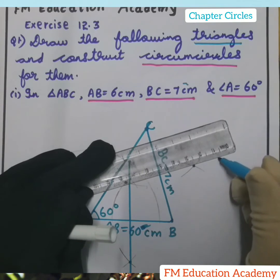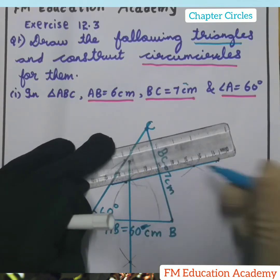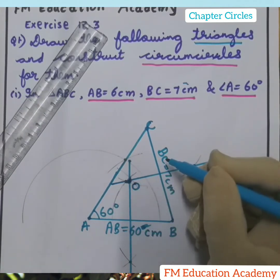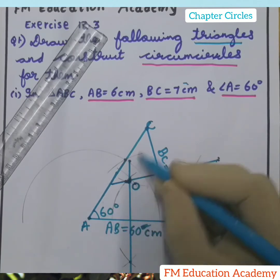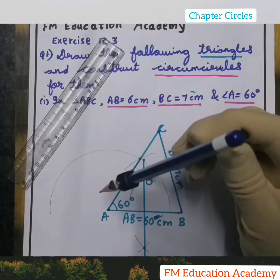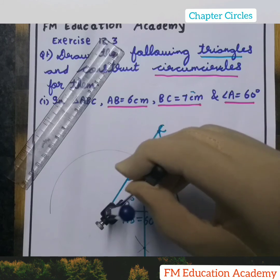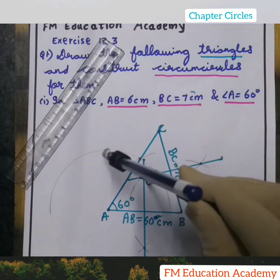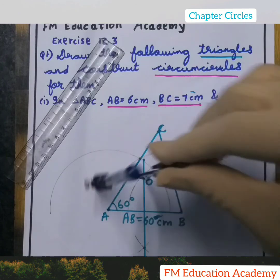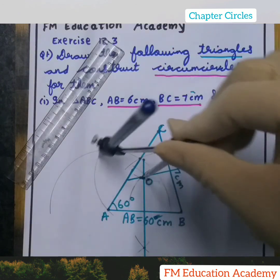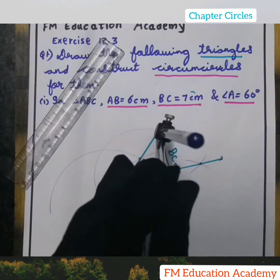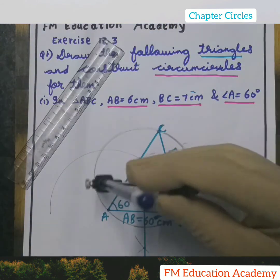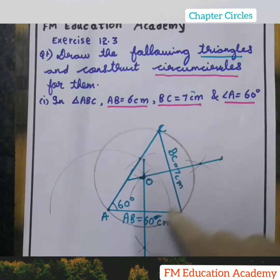Now join those two points. The point where the two perpendicular bisectors intersect is the center O. Taking the radius as OA, OB, or OC — all three are equal — draw the circle. Keep the compass on center O and set the radius equal to OA or OC to draw the circumcircle. This is my circumcircle; you can see the triangle inside the circle.